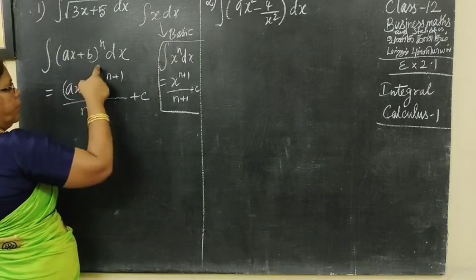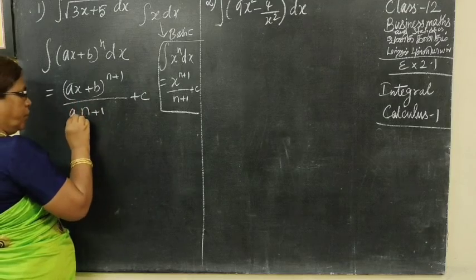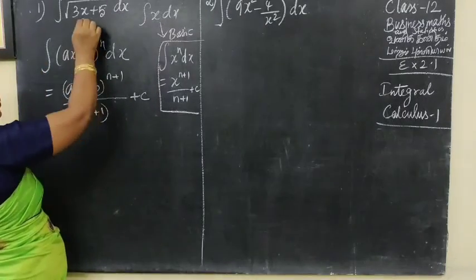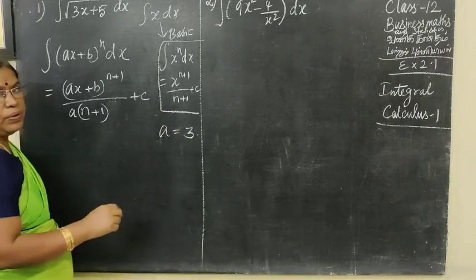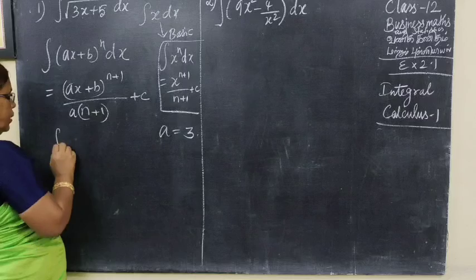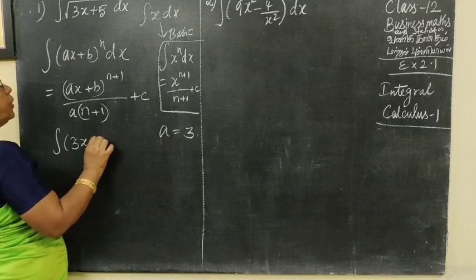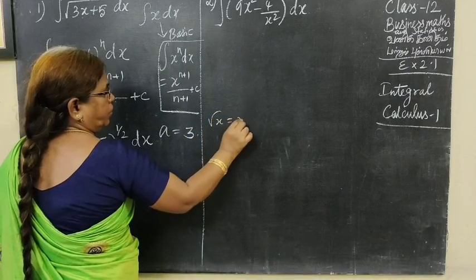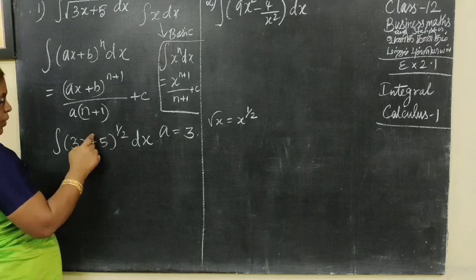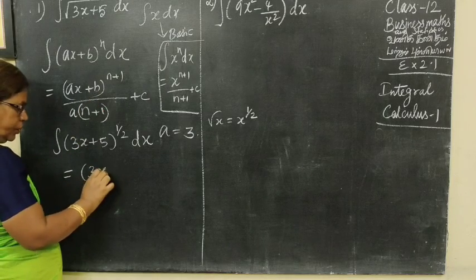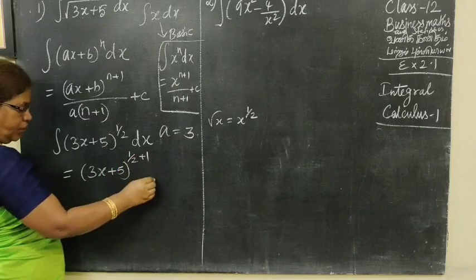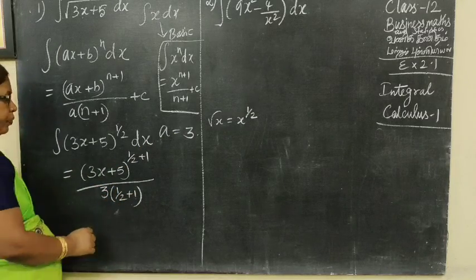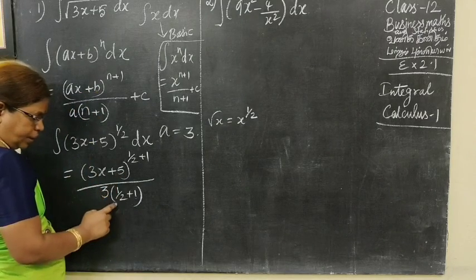So root of x is equal to x power half. We use this formula. The answer is (ax + b), that is (3x + 5) whole power n+1, divided by a value 3, so 3 bracket (n+1). Then ax + b, then a bracket (n+1).